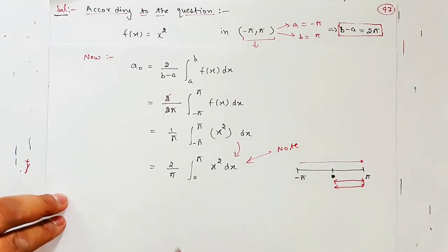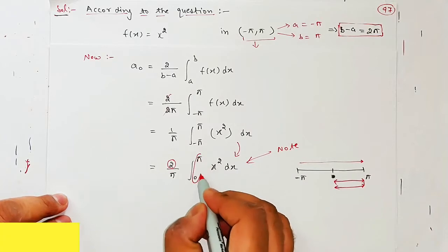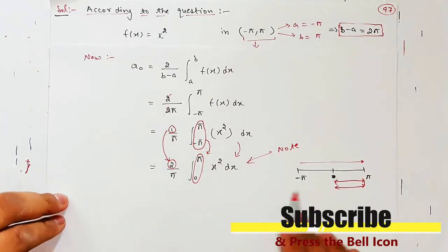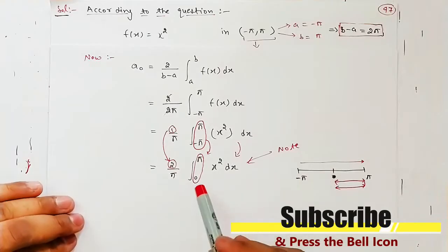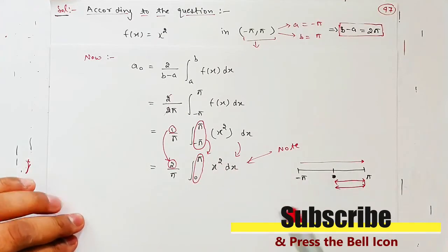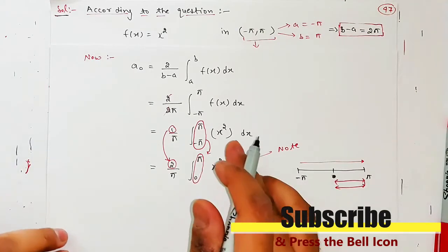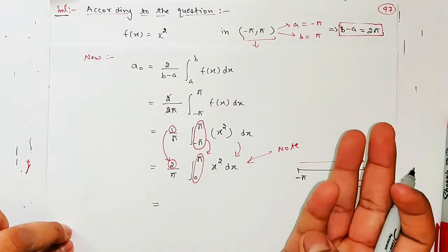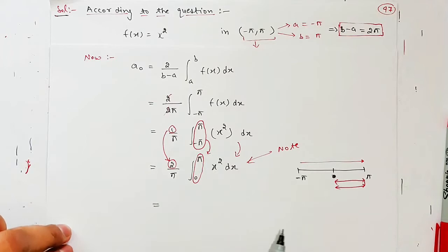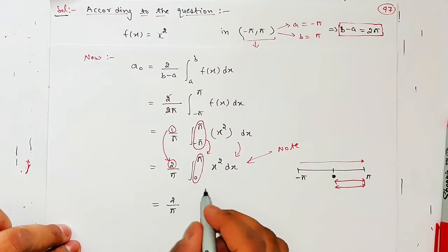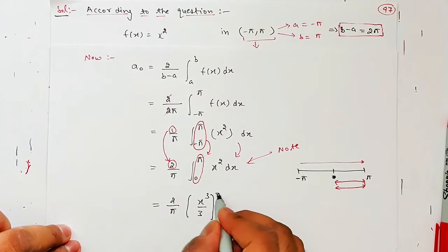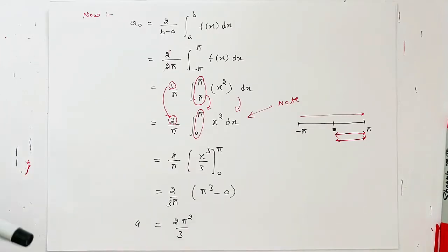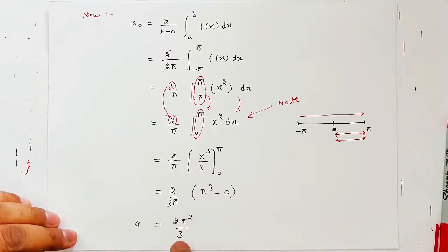Note kijiye ki yeh step kaise hai — is se yeh step kaise bani, aur yeh 1 se 2 kaise hua. Minus pi to pi integration karni jaaye, aap twice ka answer karke 0 se pi integration kar lo — answer bilkul same aayega. Obviously aapko pata hai, negative jo limit hai woh handle karni thodi mushkil hoti hai, 0 se pi comparatively asaan ho jaayegi. Toh ek pi kat jaayega, toh yeh bache 2π²/3. Toh that is your a₀.